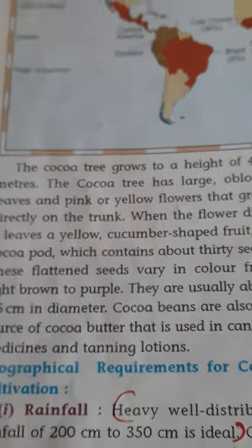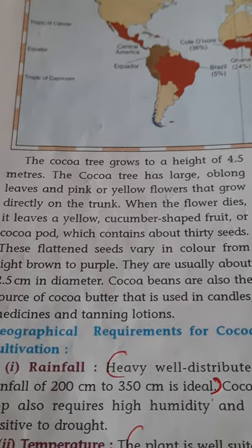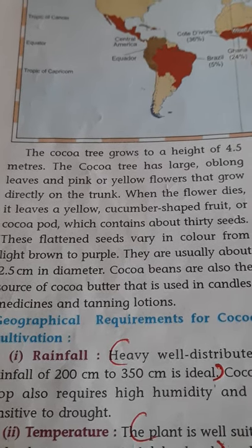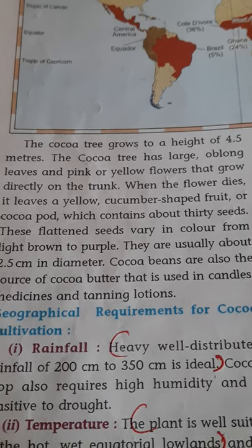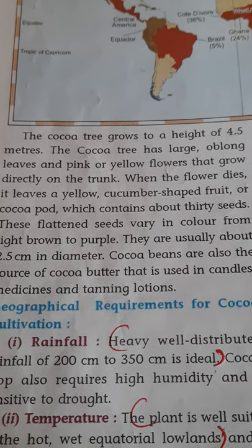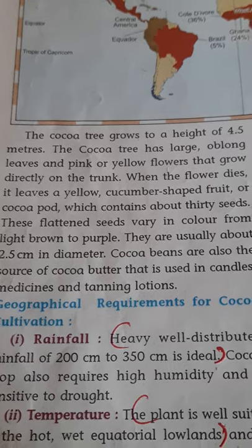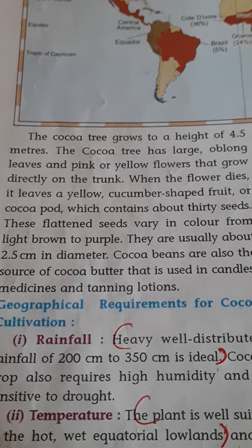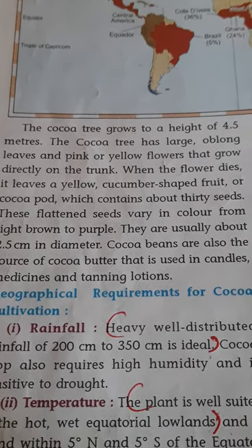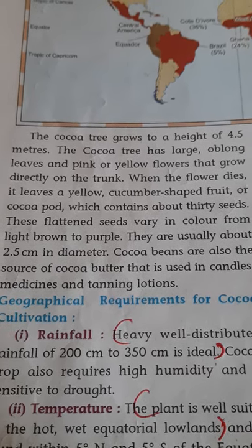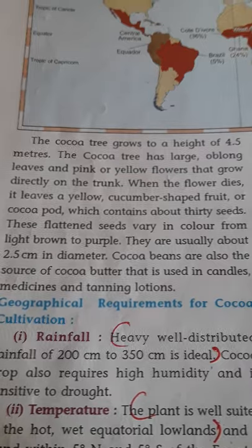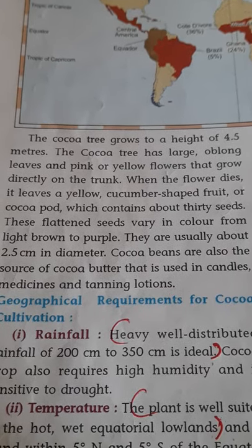The cocoa tree grows to a height of 4.5 meters. It can grow taller but is pruned to limit its height. The cocoa tree has large oblong leaves and pink or yellow flowers that grow directly from the trunk. When the flower dies, it leaves a yellow cucumber-shaped fruit called a cocoa pod.